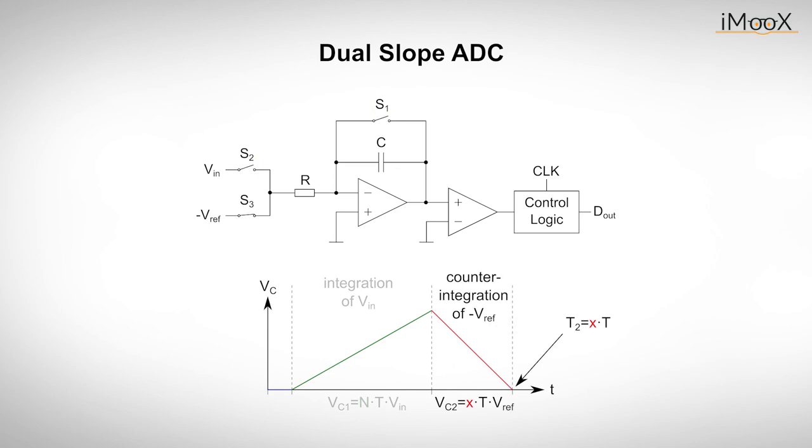In the last phase, S2 is opened and S3 is closed. The capacitor C is then discharged again by a negative reference voltage. Since the reference voltage has a negative sign, the value of the integral is zero again at a certain point in time. At this point, the comparator interrupts the reference integration. The counter in the control logic displays the result x, which is proportional to the duration of the reference integration.